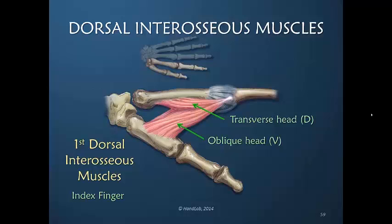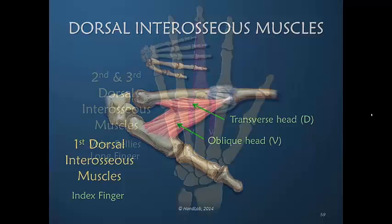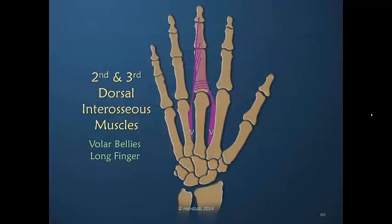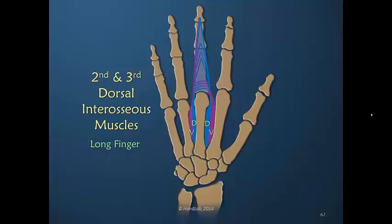In this lateral view, we see where the names transverse and oblique come from, because the oblique fibers do indeed lie in an oblique plane with abduction of the thumb. The long finger has dorsal interosseous muscles on both sides, therefore there is a volar belly on both sides. Often the volar belly on the ulnar side inserts into the dorsal apparatus, but because this is variable, it could be exactly opposite. The dorsal belly, however, inserts into the dorsal apparatus bilaterally.